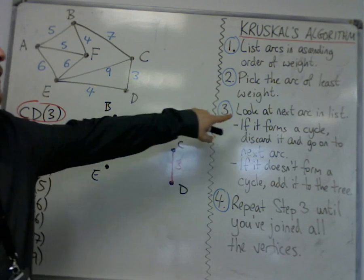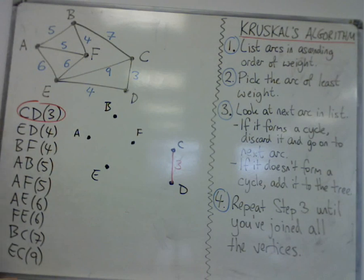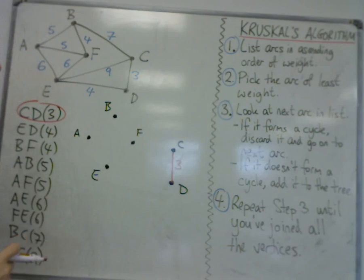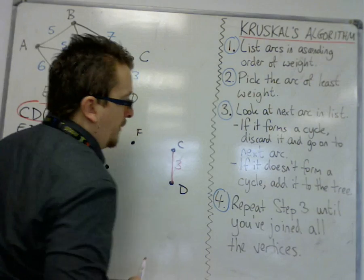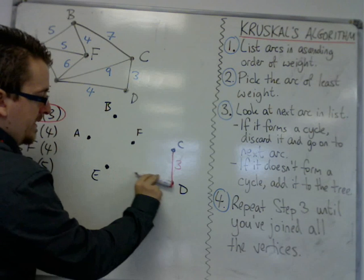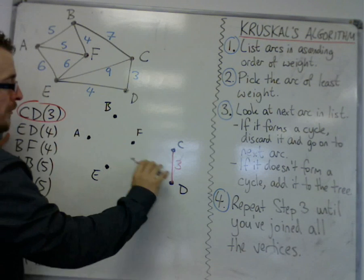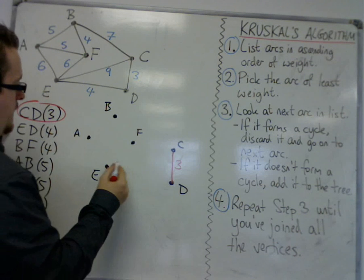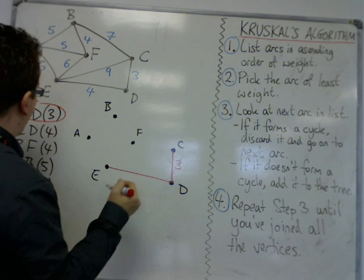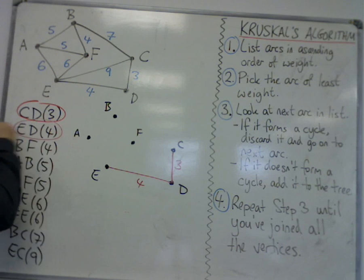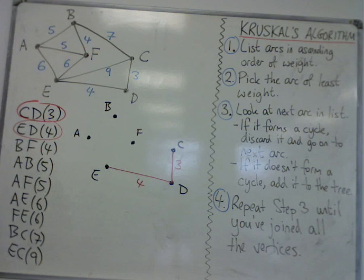Then we're told to look at the next arc in the list, so we look at ED. If it forms a cycle, discard it and go on to the next arc. If it doesn't form a cycle, add it to the tree. So let's have a look at what ED will do. If I put ED in there, E to D, that will not form a cycle, because I can't really form a cycle here. So ED will have to go in at four. So I circle ED. I've added it to my minimum spanning tree.